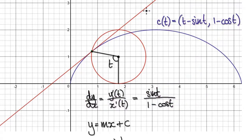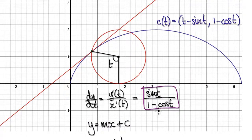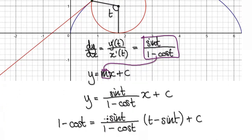Now, the equation of this tangent line is y = mx + c. Now that we know the gradient, we can put the gradient into the m. That will then give us this.